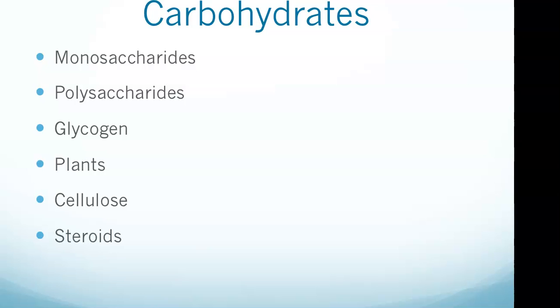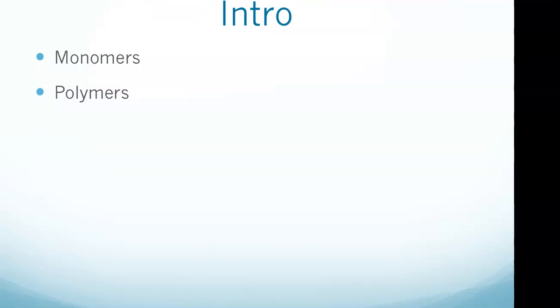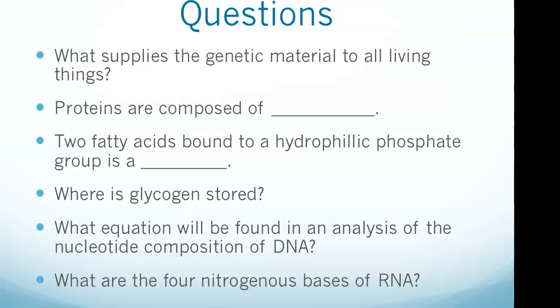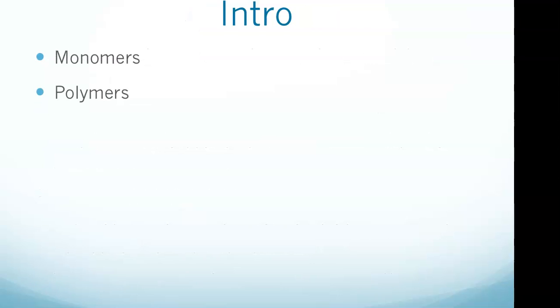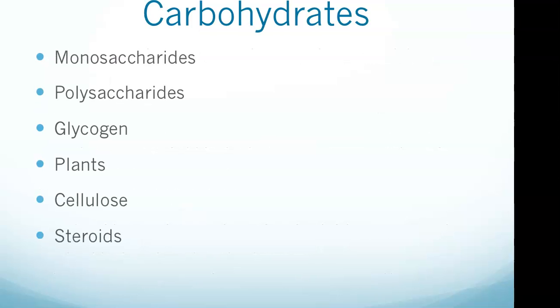Glycogen is stored in the liver and muscle tissue as a form of energy. Glycogen is a polysaccharide containing glucose molecules. You can see that on the fourth bullet point: where is glycogen stored? And our answer there was in the liver.